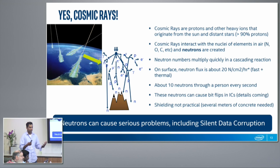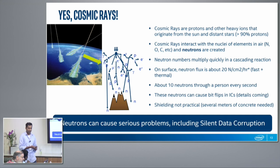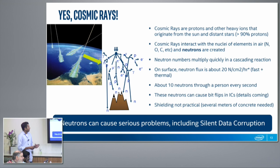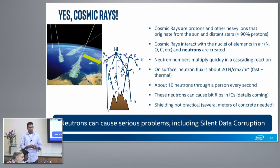Any given second there's about 20 neutrons going through a person. And because they're neutral, usually they just go through without any problem. But they do sometimes cause a change in your DNA — that's actually what causes mutations — but by the same mechanism they can also cause bit flips. As far as neutrons are concerned, because they're neutral and not charged, they don't react with the sea of electrons, so they essentially travel very far in matter. It's not practical to shield against neutrons.